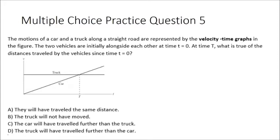Question five is also tricky. The motions of a car and a truck along a straight road are represented by velocity-time graphs, and the two vehicles are initially alongside each other at t equals zero. At time big T, the two objects cross and have the same velocity. But all the way up until that point, the truck was moving much faster than the car. Which means over the entire interval from t equals zero to big T, the truck traveled further. The answer is D — the truck will have traveled further than the car. To verify: the area of the truck's rectangle is larger than the area of the car's triangle.